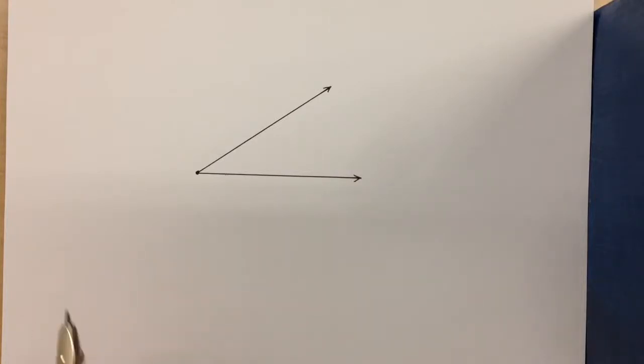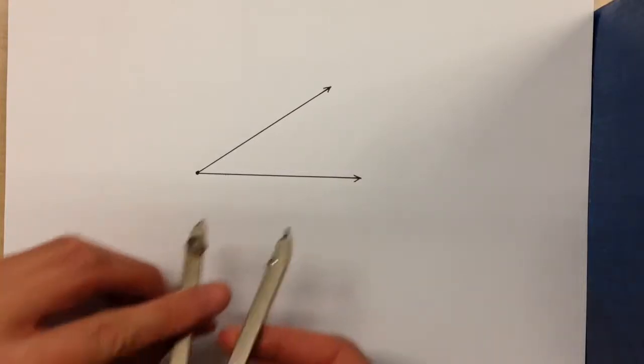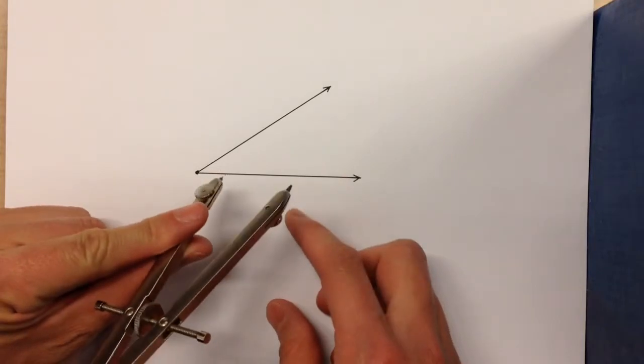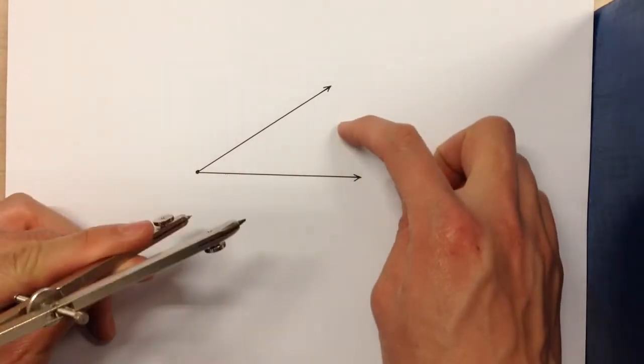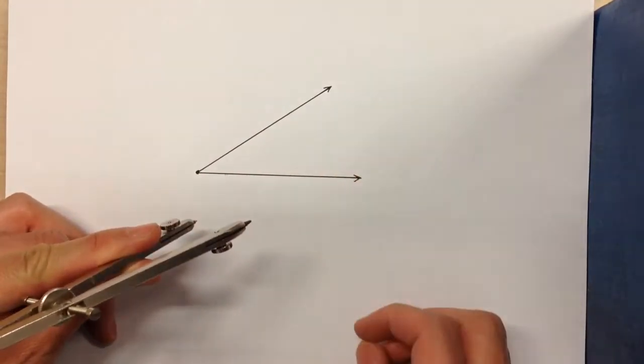Today I'm going to show you how to construct an angle bisector. The thing you have to know about an angle bisector is that any point on the angle bisector is equidistant from each side.